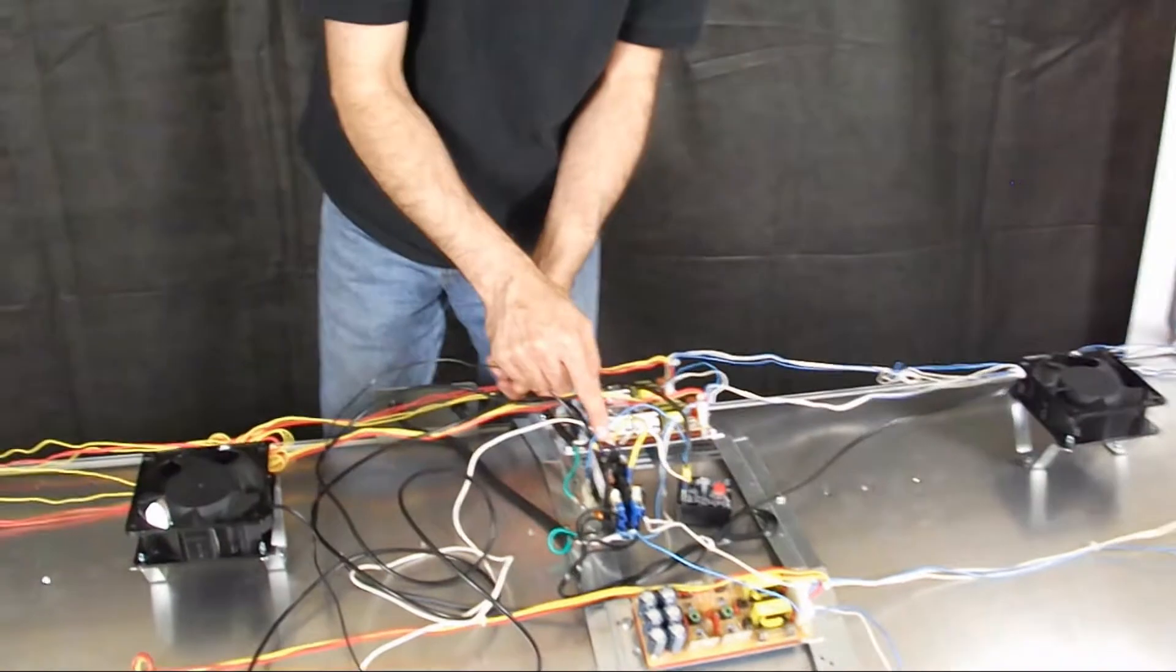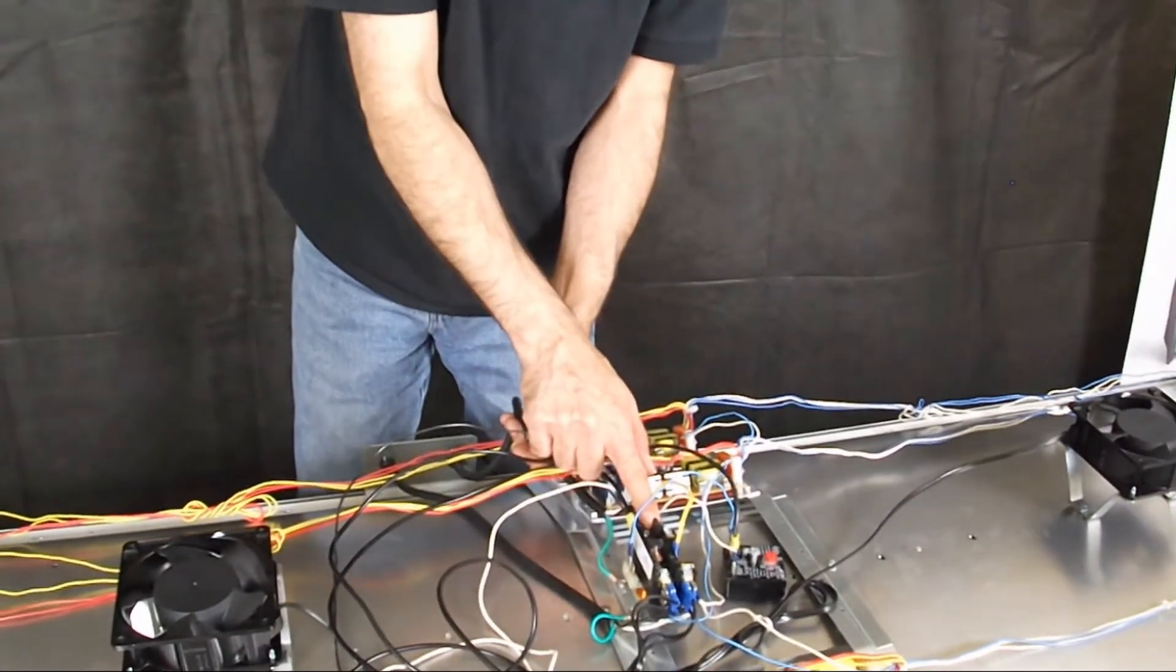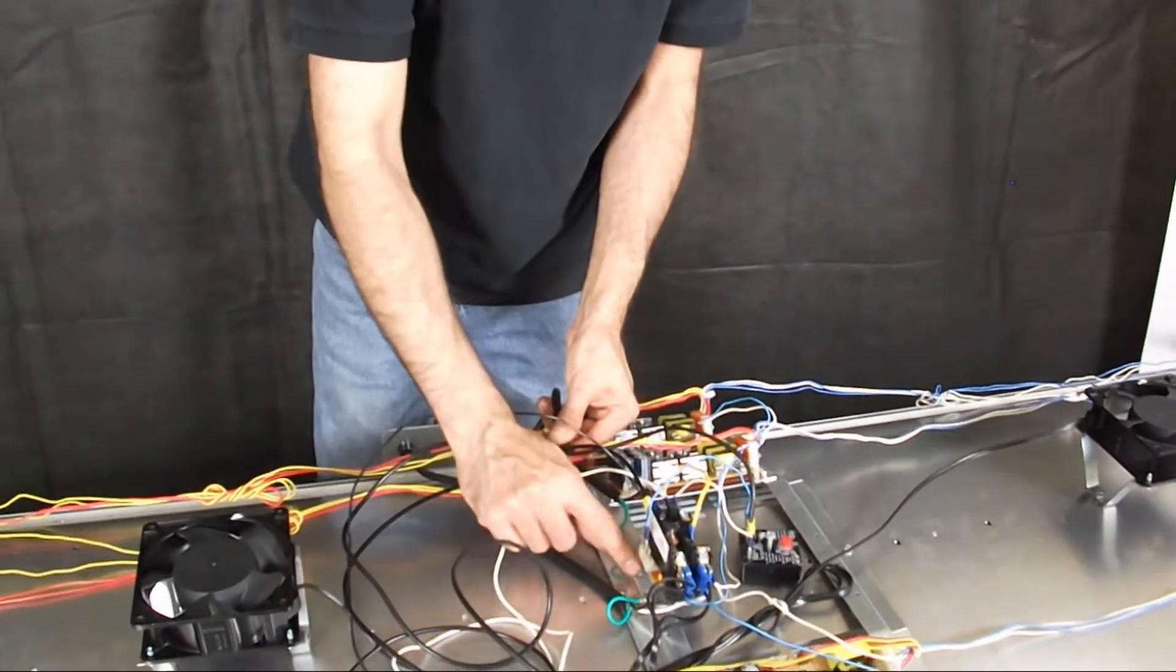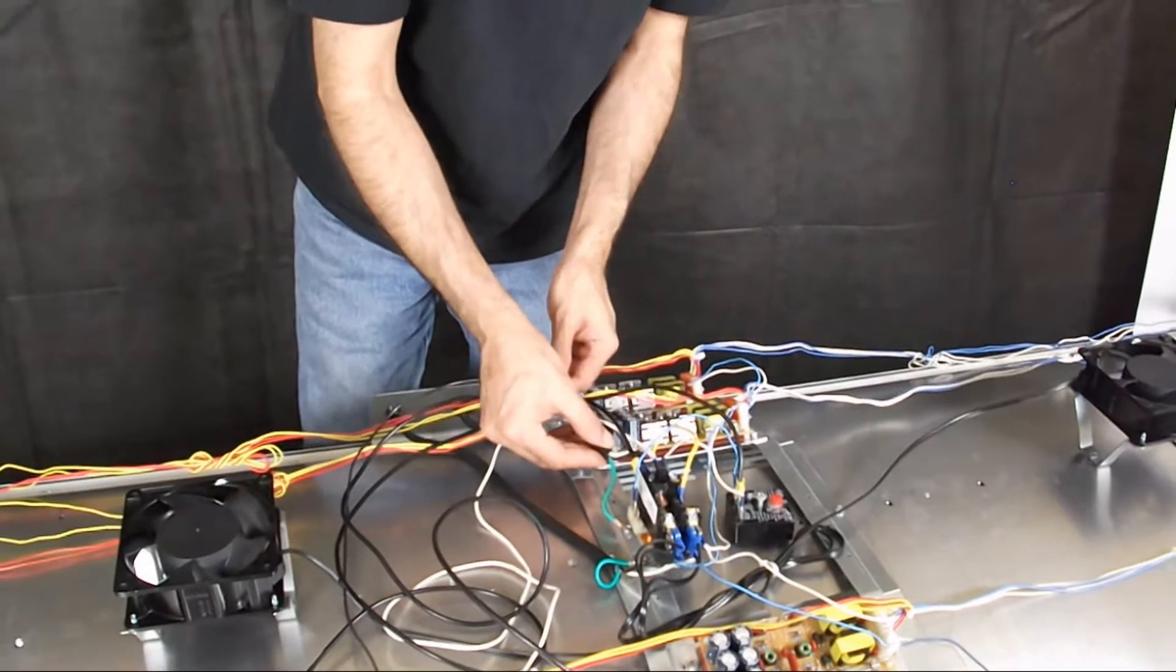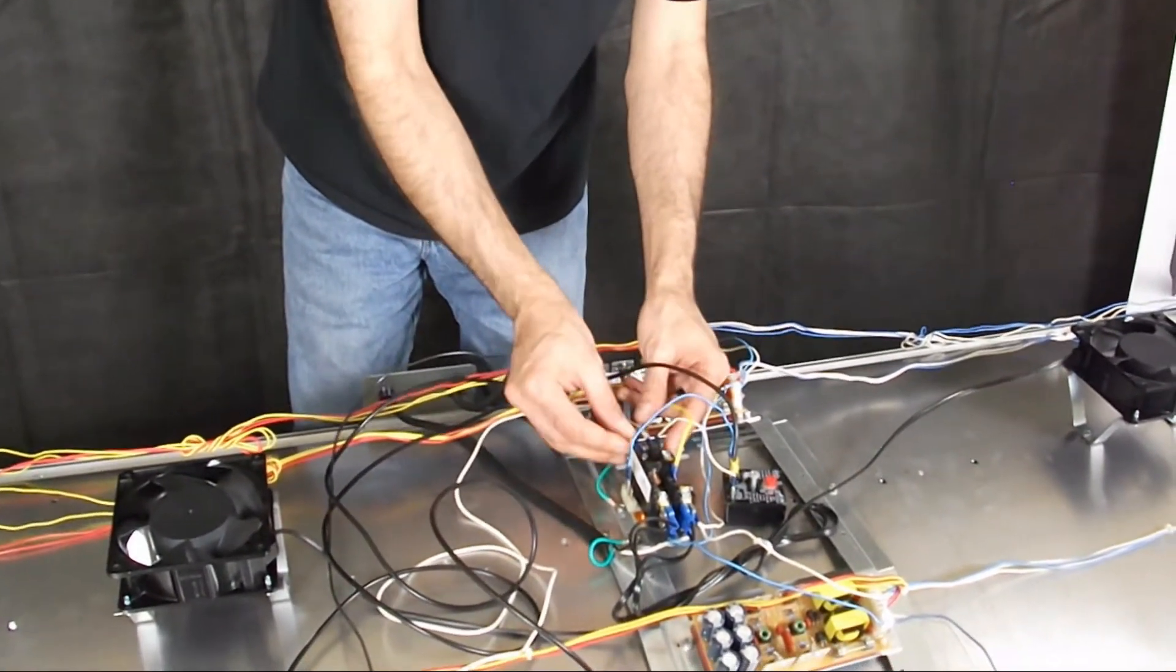You have a hot and a neutral, or black and white respectively, connecting right here to the primary terminals of your contactor, and there is a green ground that goes to the chassis of the bed. So this is right where the power comes in. Now, from here,